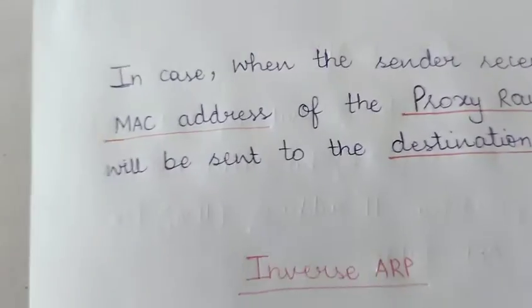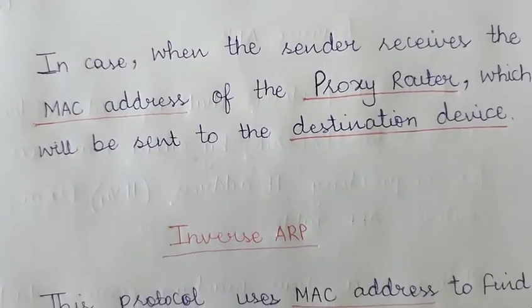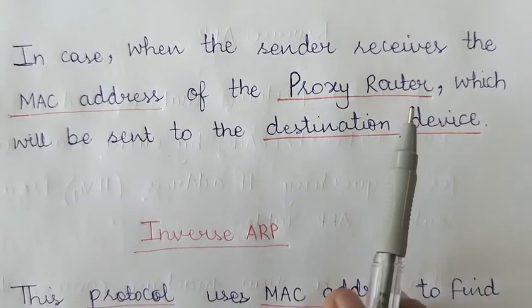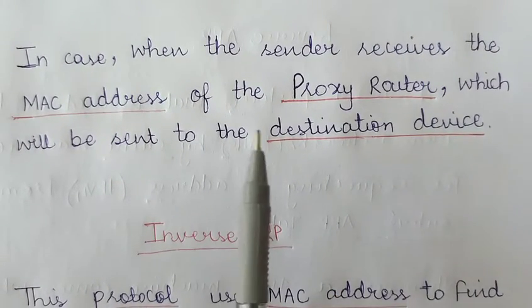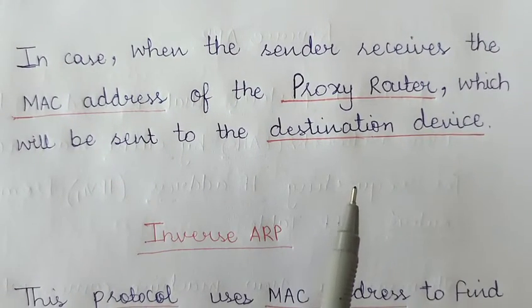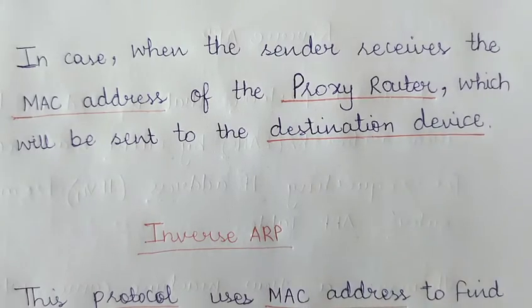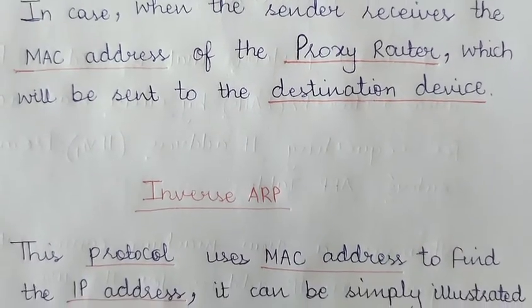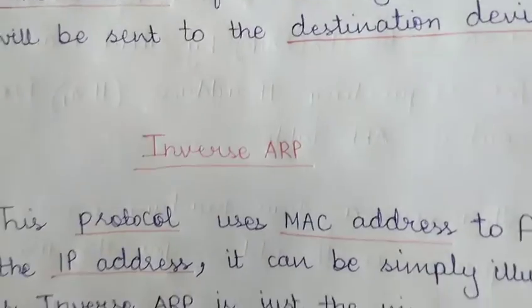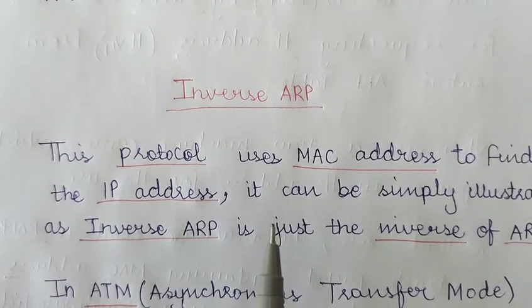In proxy ARP, the desired router receives the broadcast. When the sender receives the MAC address of the proxy router, that address is then sent to the destination device. The third and last term related to ARP is inverse ARP.